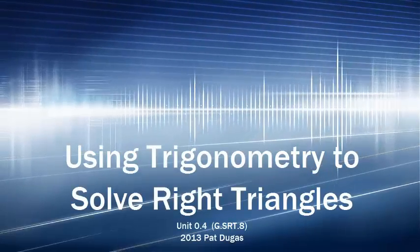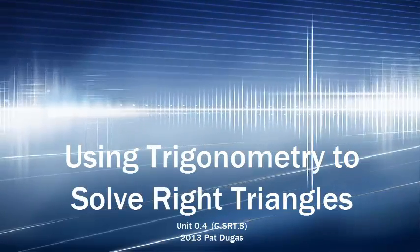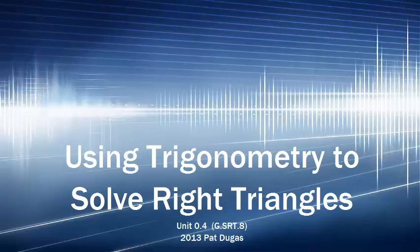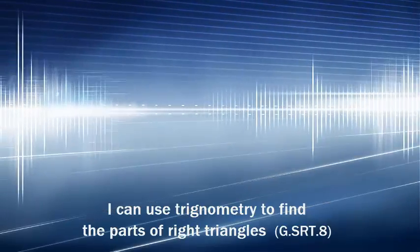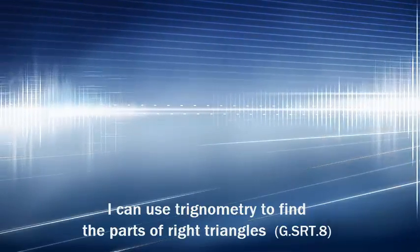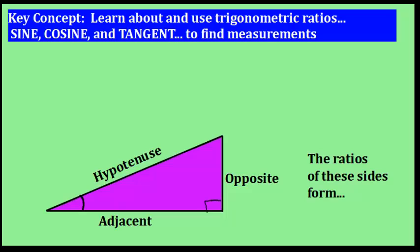We're going to use what you know about trigonometry to solve right triangle problems — problems involving the parts of a right triangle. We'll use those trigonometric ratios, specifically sine, cosine, and tangent, to find measurements.